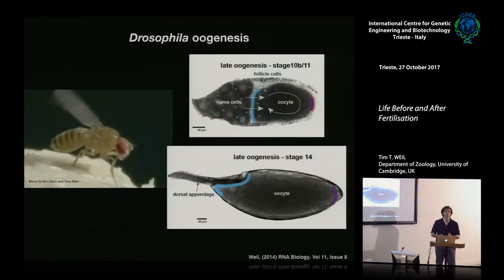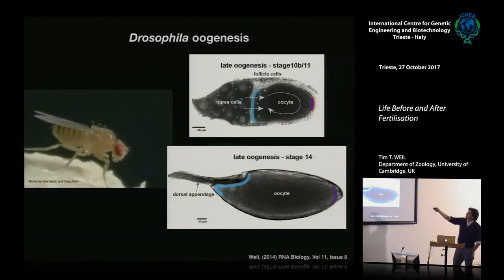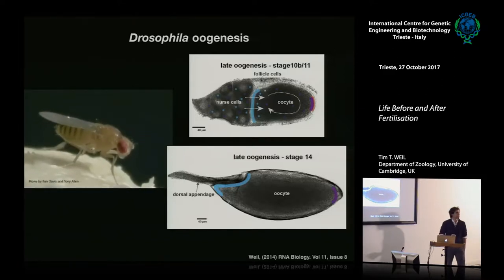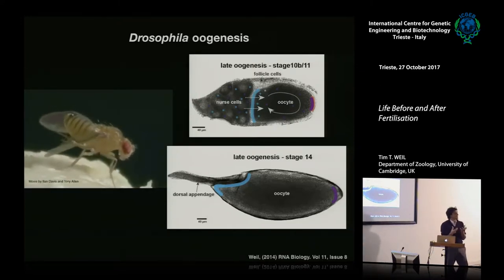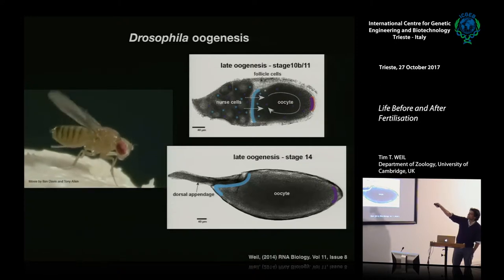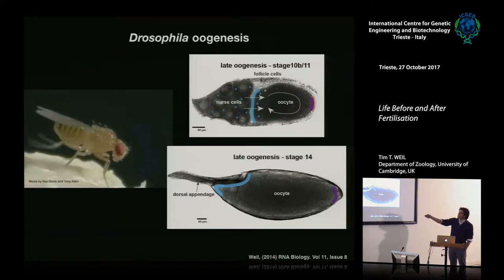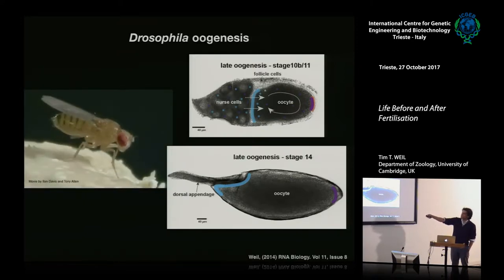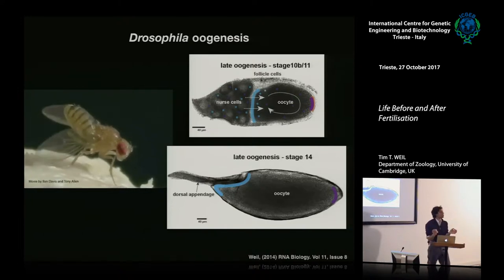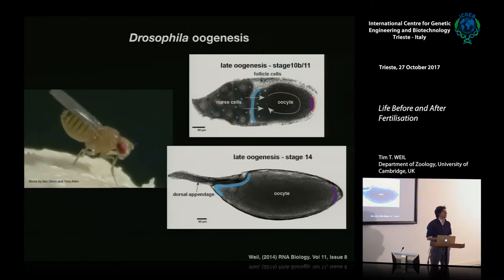Classic examples include bicoid RNA localizing to the anterior and nanos and oskar RNA localizing to the posterior. During oogenesis, we see dynamic events where the oocyte begins to stream and nurse cells empty their cytoplasm into the oocyte. At the mature egg stage, you have bicoid at the anterior and nanos at the posterior. Both are translationally controlled, kept off for the most part, waiting for fertilization to launch embryogenesis.